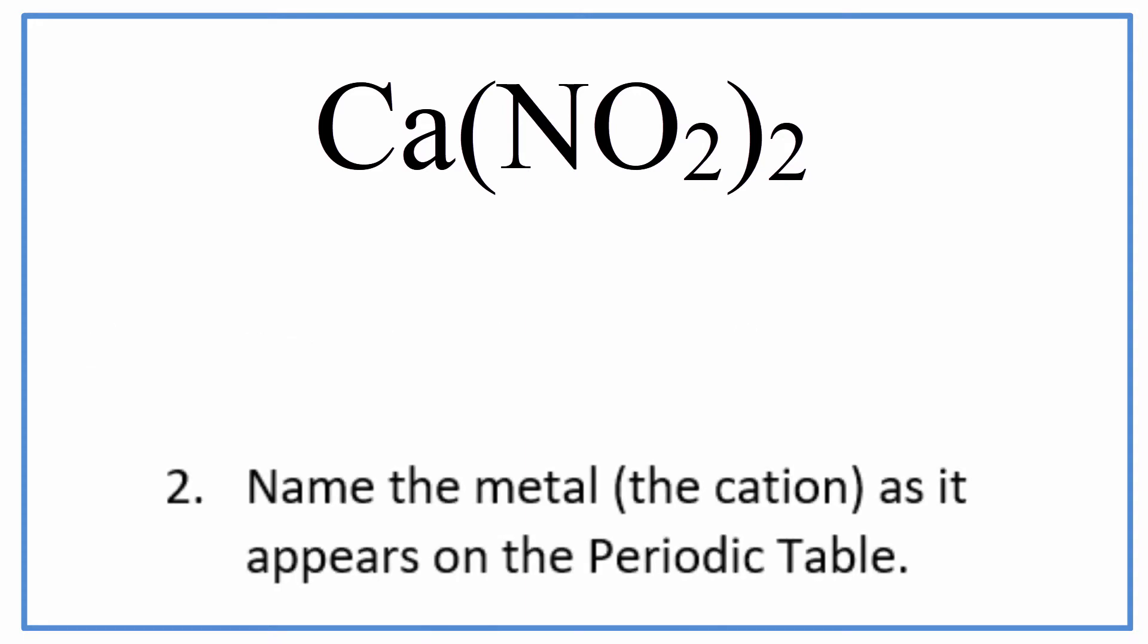The second step, we want to write the name of the metal using the periodic table. For Ca, it's calcium, and we just write the name calcium as it's found on the periodic table.